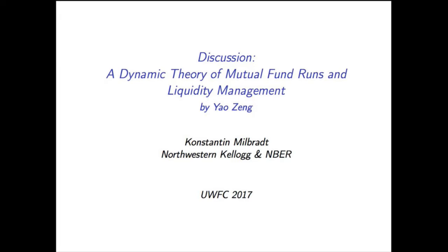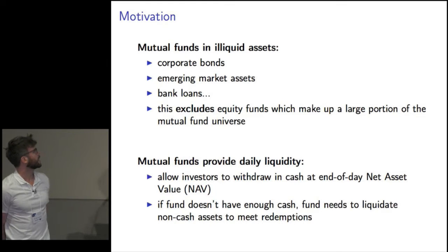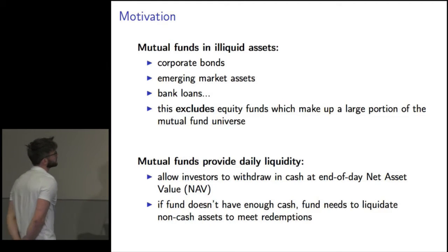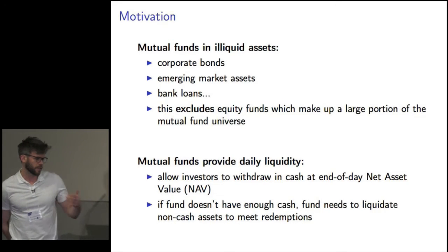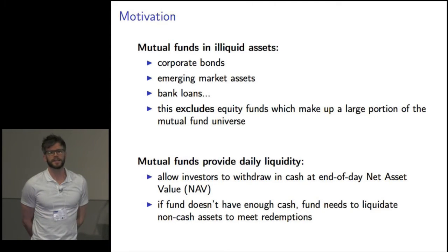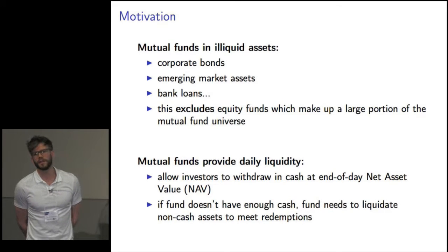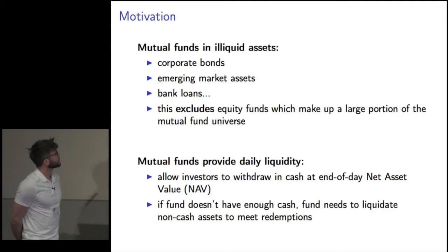Thanks to the organizers for inviting me to discuss this paper. The motivation is that mutual funds are invested in illiquid assets — specifically corporate bonds, emerging market assets, and bank loans. This excludes equity funds, which make up a large portion of the mutual fund universe. That exclusion is important because with a mark-to-market rule, if the price of different assets is observable and feeds through the NAV, a lot of the run mechanism in this model is not going to apply.